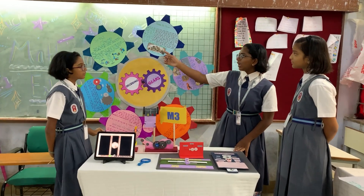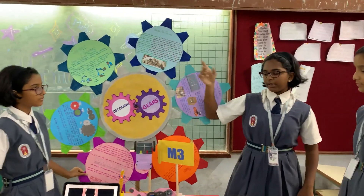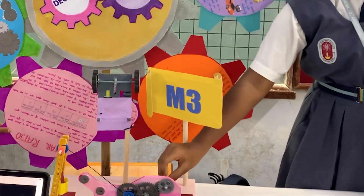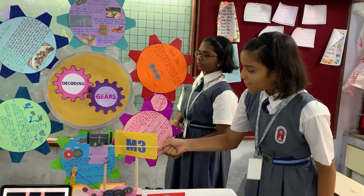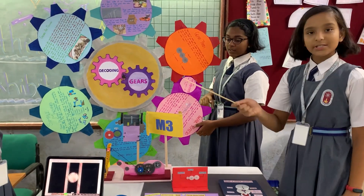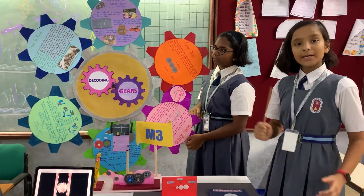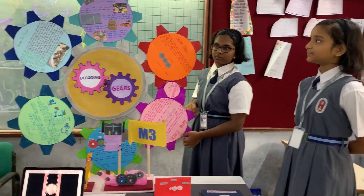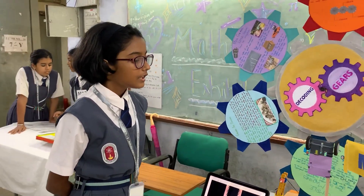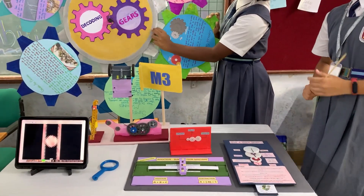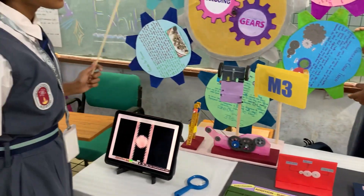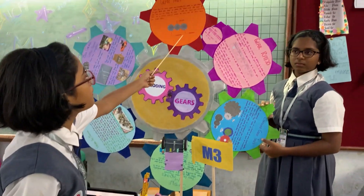A gear is just a wheel with teeth on it. In order for a machine to work, we need at least two gears connecting to each other. As you can see, the bigger gear is rotating the smaller gear, which is connected to a shaft, which is rotating the wheels of the toy car. When two or more gears are connected together, they are called a gear train. The gear which you are moving is called the driver gear, and the gear which you are trying to move is called the driven gear.